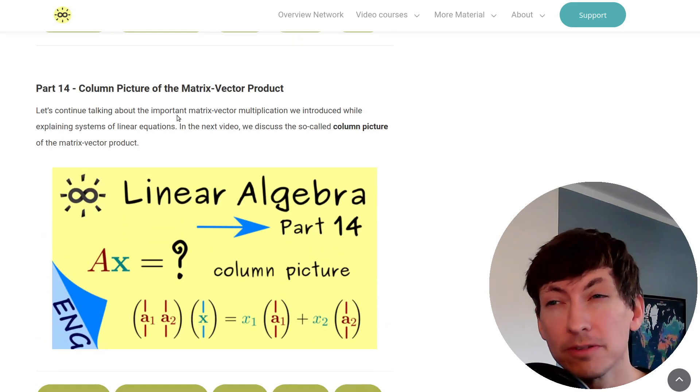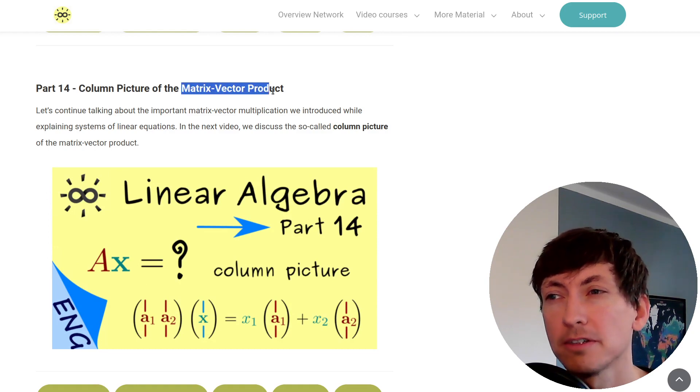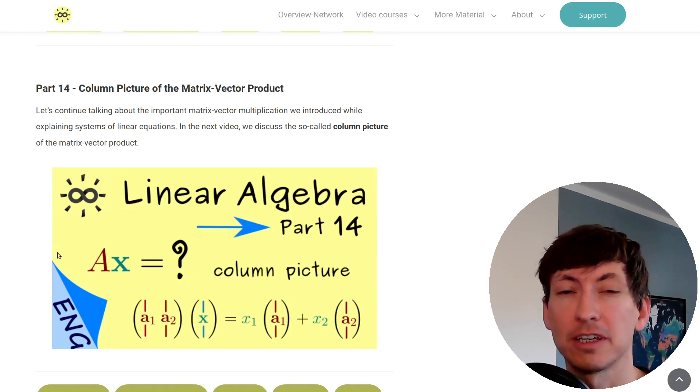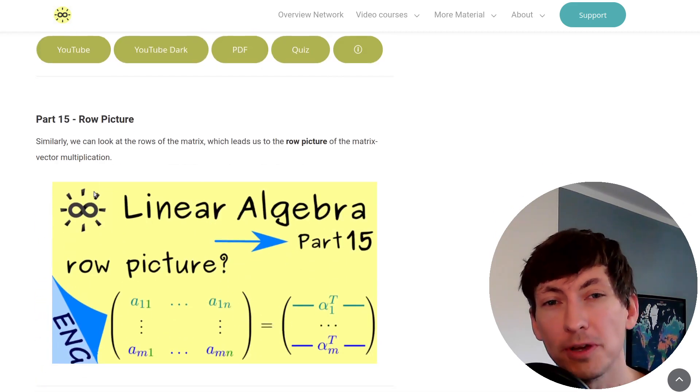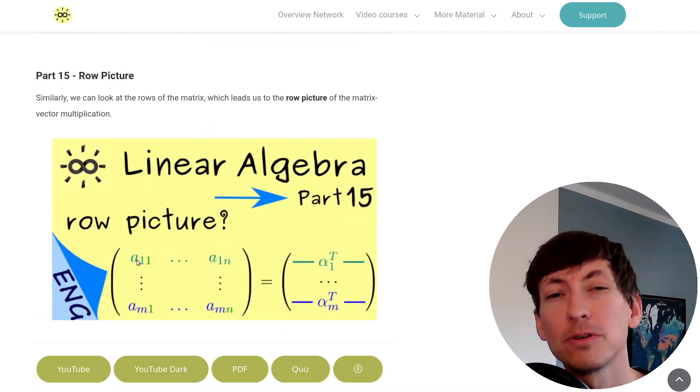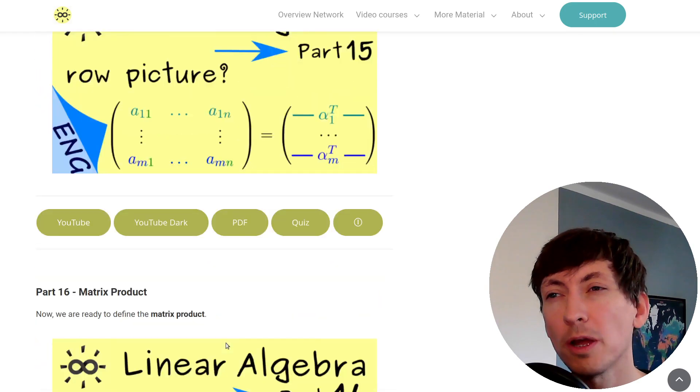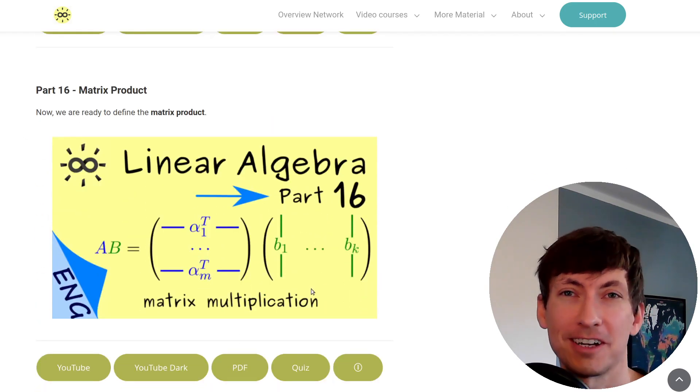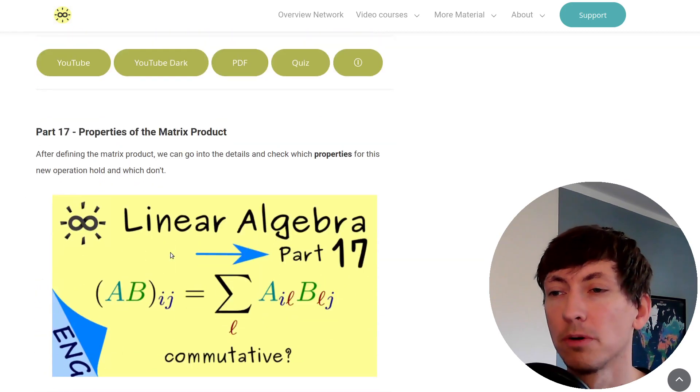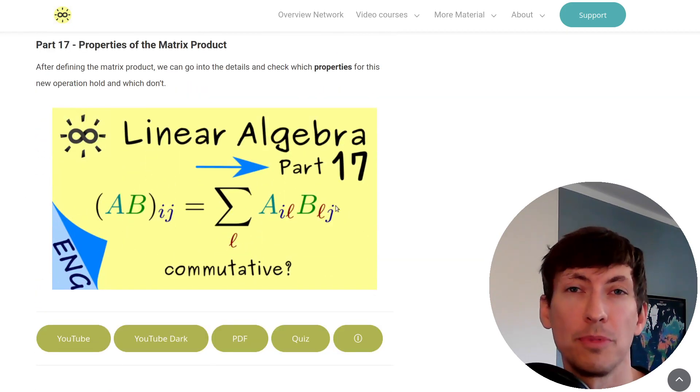In the next two videos I show you two interpretations of the matrix vector product. The first one is the column picture where we have the columns in mind, and the next one is the row picture where we essentially just look at the rows of the matrix. If you have understood both pictures, then it is definitely clear for you why we have this special definition for the matrix product. There you will see why this matrix multiplication makes sense. Then we can calculate with the matrices and show properties of the matrix product.